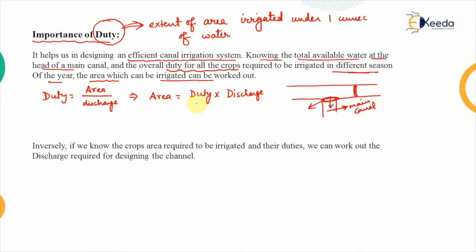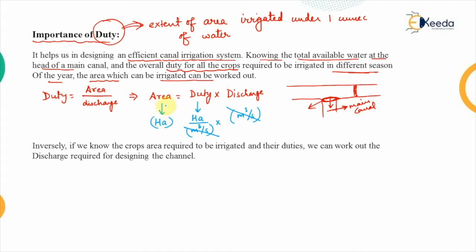You can verify this with units: the unit of duty is hectares per cumec (cubic meters per second), and the unit of discharge is also cubic meters per second. These cancel out, giving the answer in hectares, which is the unit of area.